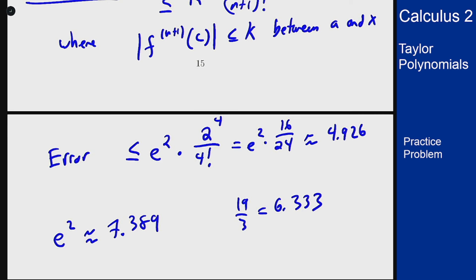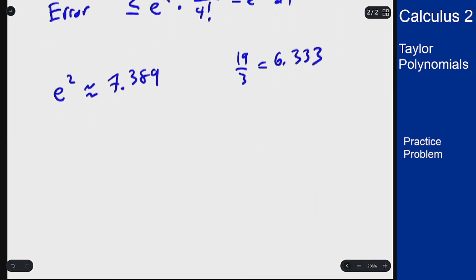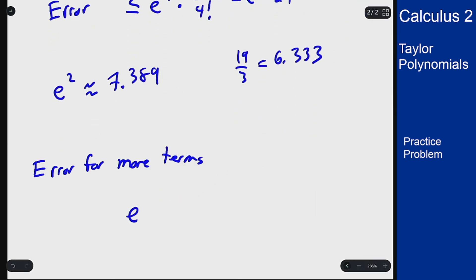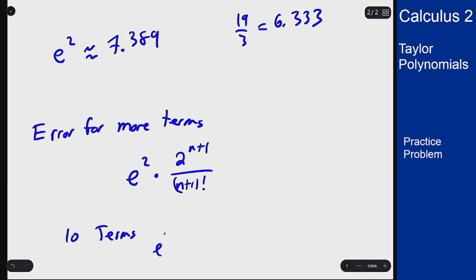But we can see that if I were to take more terms in the polynomial with the same setup here, my error for more terms is e squared times 2^(n+1) over (n+1) factorial. So if I take say 10 terms, I'm getting e squared times 2^11 over 11 factorial and that error bound is now 0.000379.